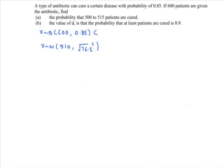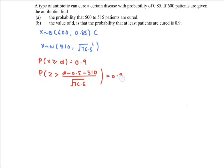Next, referring to part (b): the value of d is such that the probability that at least d patients are cured is 0.9. So the probability that x is greater than or equal to d equals 0.9, because of 'at least.' Do remember to apply the continuity correction and then standardize. So here, straightforward, we have z greater than d minus 0.5 minus 510 over the square root of 76.5 equals 0.9. Simplifying, z is greater than d minus 510.5 over the standard deviation.